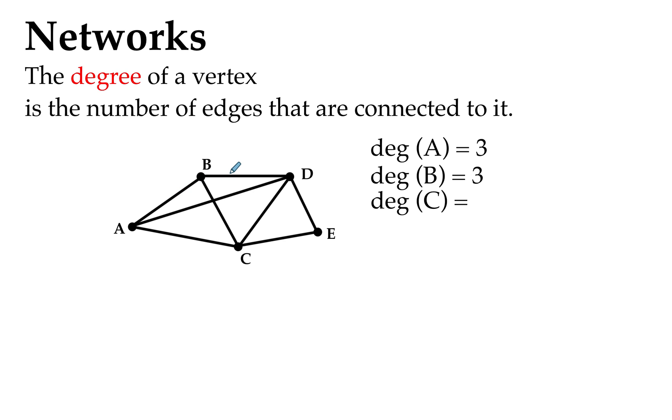Degree for C is a little more I think: one, two, three, four edges connected to it, so it has a degree of four for C. And for D it has a degree of four, and E only has two edges connected to it, so we would say the vertex E has a degree of two.